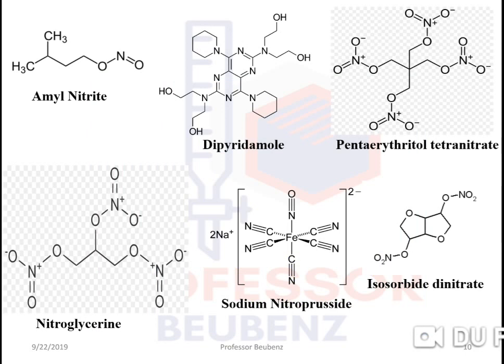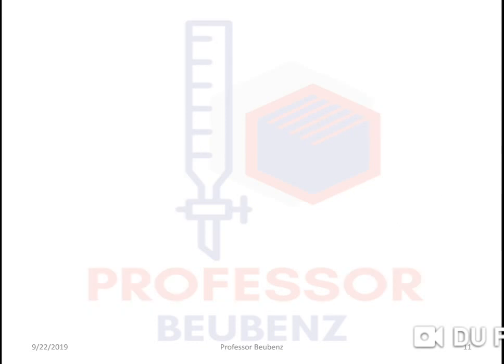Examples with structures include amyl nitrite, dipyridamole, pentaerythritol tetranitrate, sodium nitroprusside, isosorbide dinitrate, and nitroglycerin. These are the structures of nitrovasodilators. There is no SAR for nitrovasodilators because all the drugs have different series of structures and therefore structural activity relationships cannot be established.